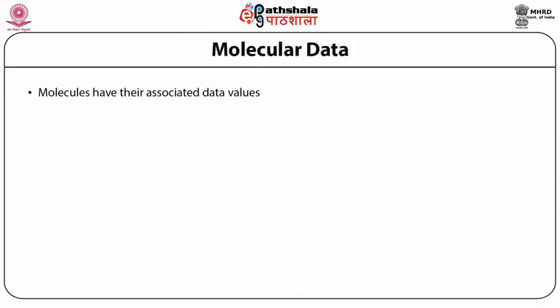All molecules have their associated data values which may be text values such as the accepted name of an enzyme, say for example 6-phospho-fructokinase, a name for the third enzyme in the glycolysis pathway. Or the data values may be numeric, say for example a four-digit unique number where each digit is separated by a dot, like 2.7.1.11. This number is assigned by the enzyme commission and is the standard recognized by the International Union of Biochemists and Molecular Biologists, and therefore is used for storing data values regarding enzymes.